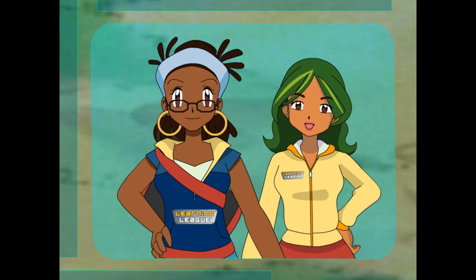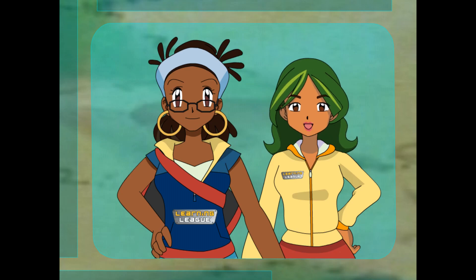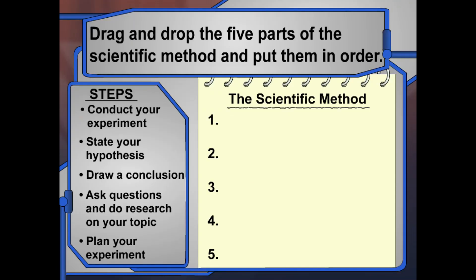I know pool chlorine can sometimes turn hair greenish, but this isn't greenish — this is straight up green. Is it possible the pool did this? Let's find out. What steps do we need to take to set up a complete experiment? Stick to the steps of the scientific method — drag and drop the five parts of the scientific method from the list and put them into order.